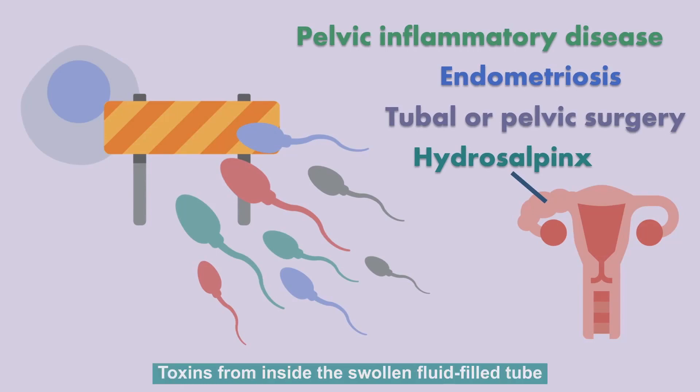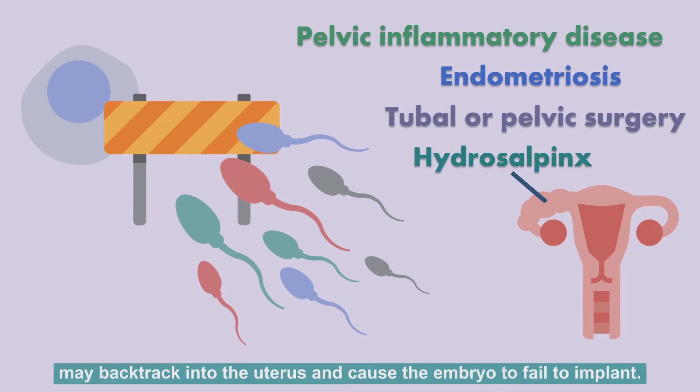Toxins from inside the swollen, fluid-filled tube may backtrack into the uterus and cause the embryo to fail to implant.